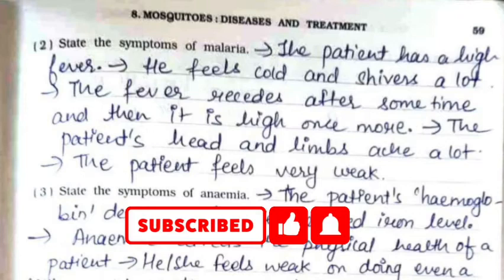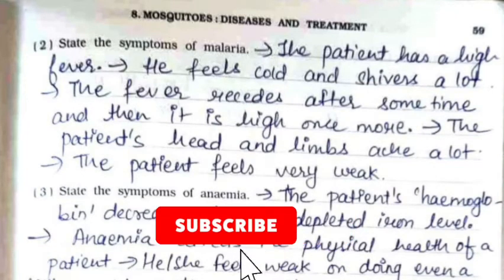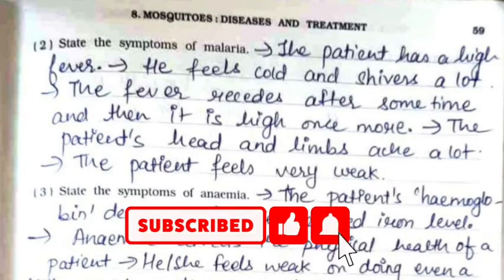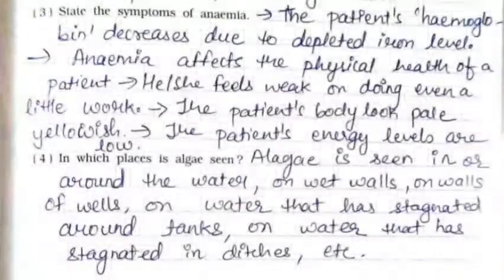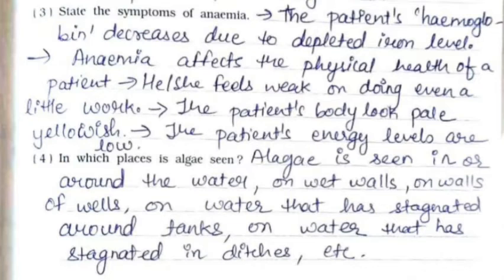Second: state the symptoms of malaria. The patient has a high fever, feels cold and shivers a lot. The fever recedes after some time and then is high once more. The patient's head and limbs ache a lot and the patient feels very weak. Third: state the symptoms of anemia. The patient's hemoglobin decreases due to the depleted iron level. Anemia affects the physical health of a patient — he or she feels weak on doing even a little work, the patient's body looks pale yellowish and energy levels are low.